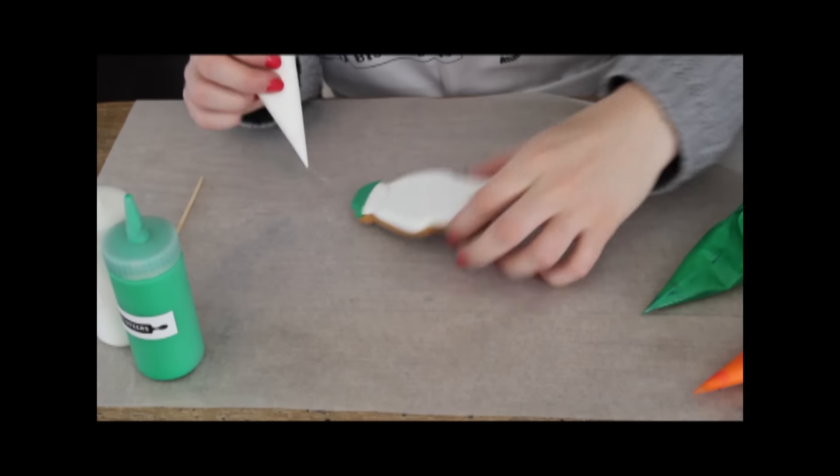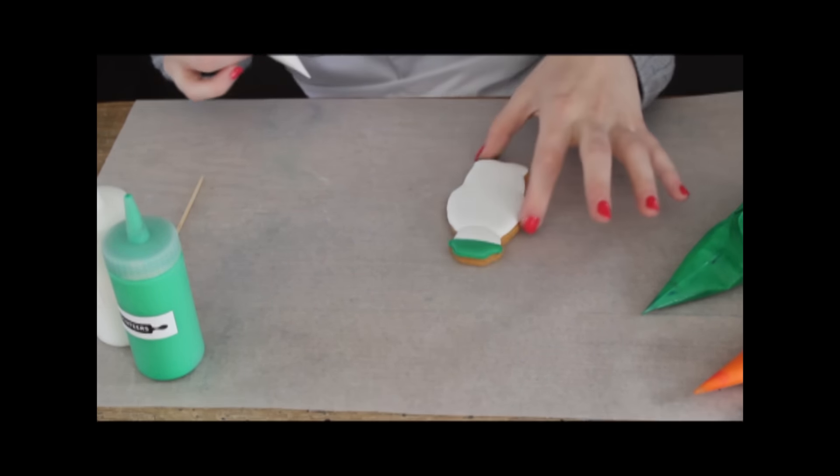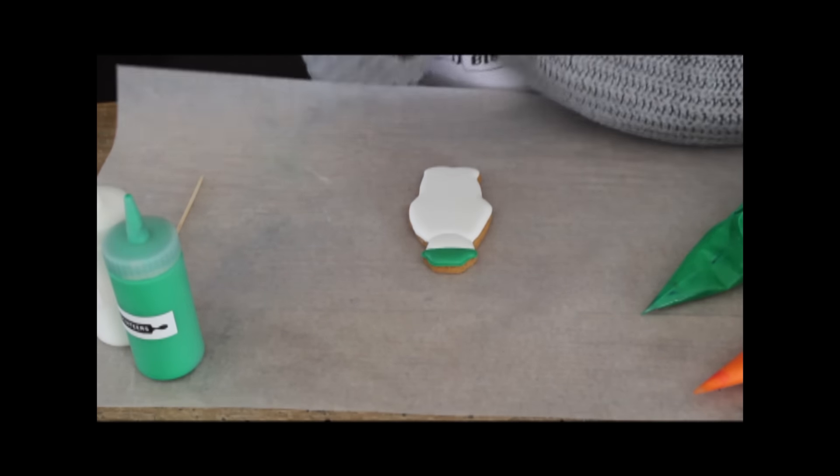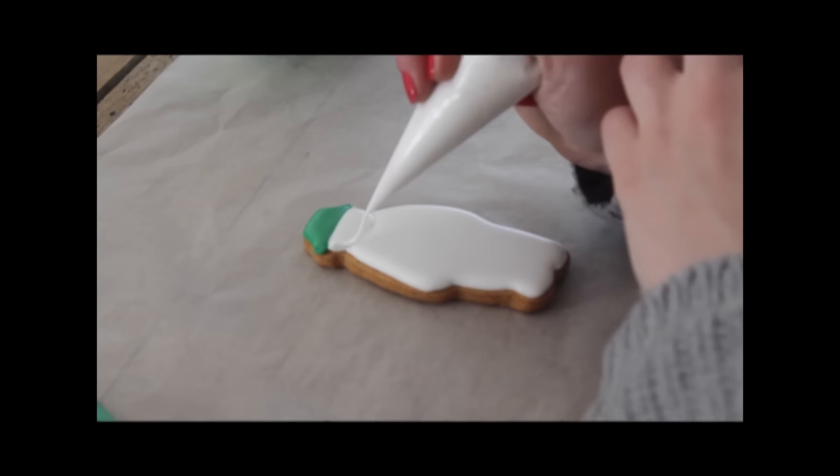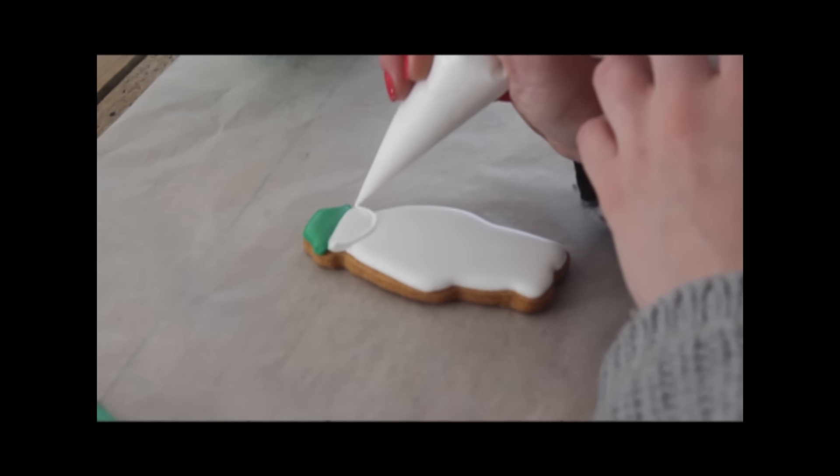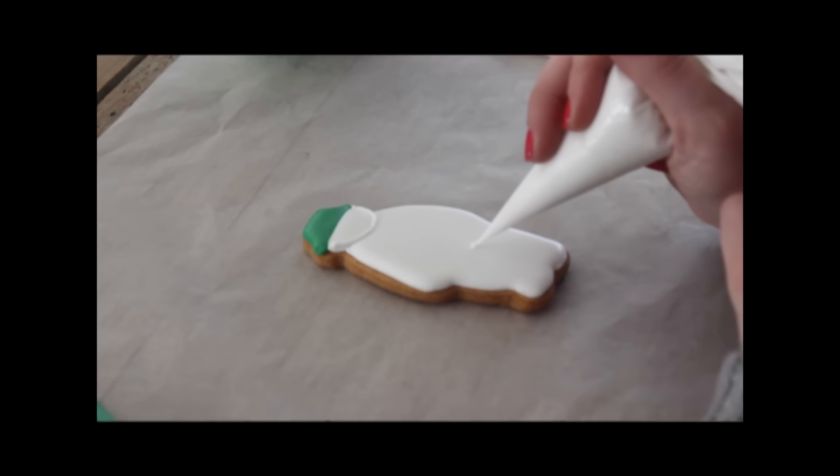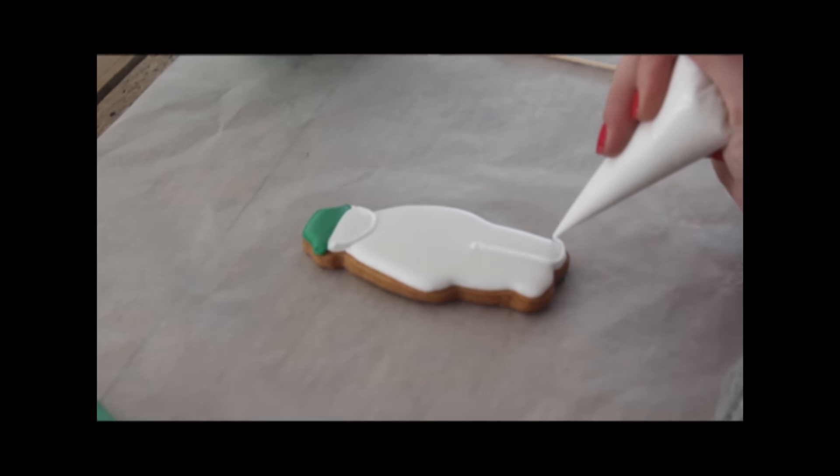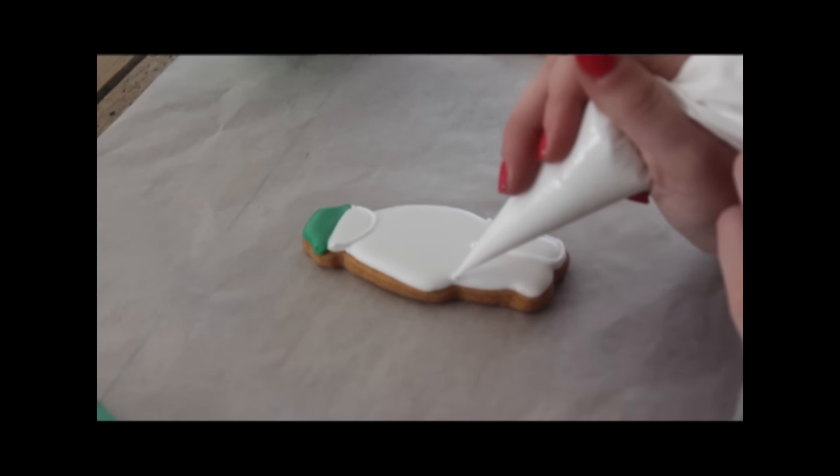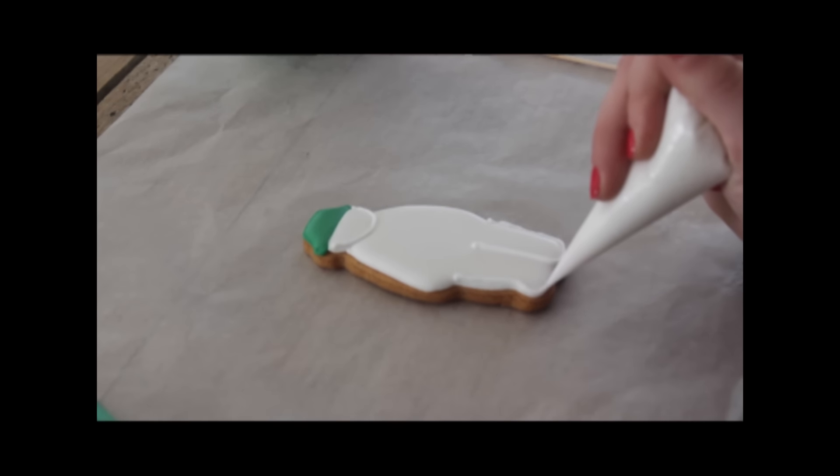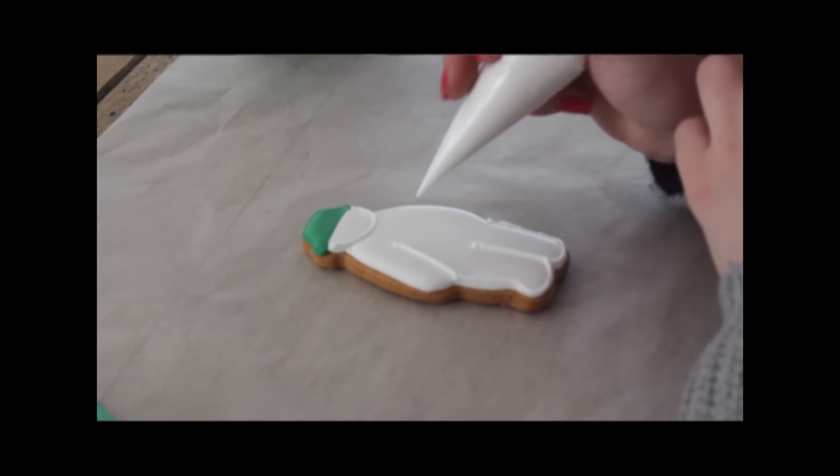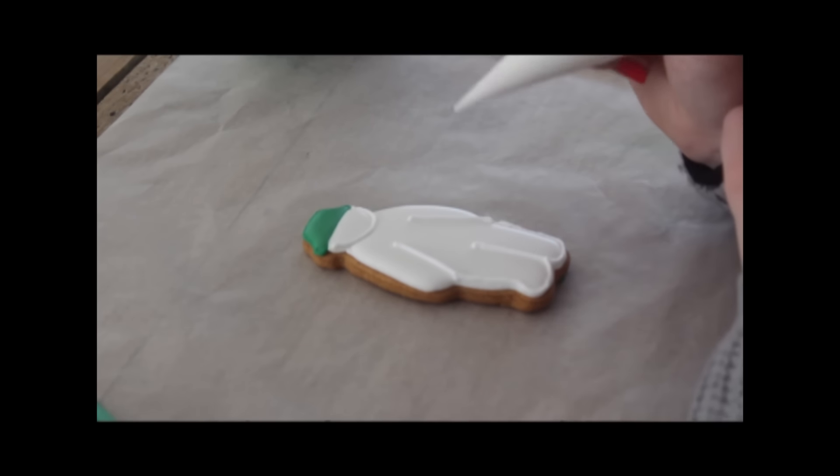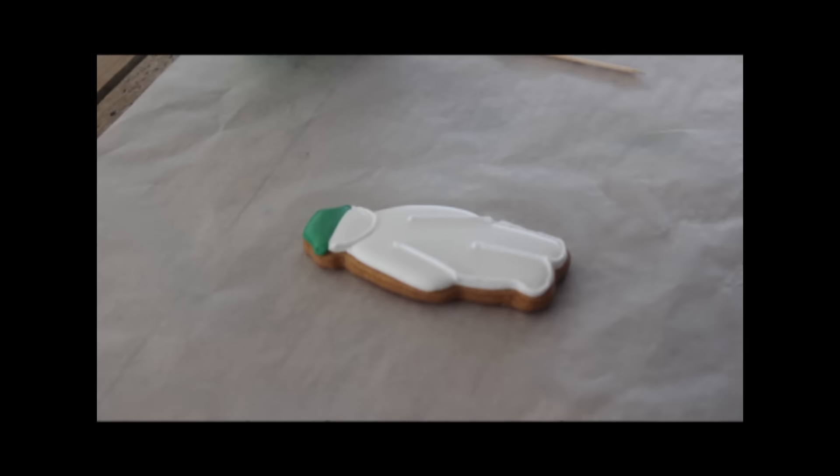Once your biscuit is set hard, you need to just add on some detail, add on some definition. We're going to go in with our white line icing first and we're just going to outline his face like that, and we're just going to define his legs and his feet and then just make sure that he's got some arms.